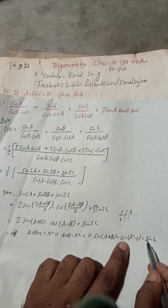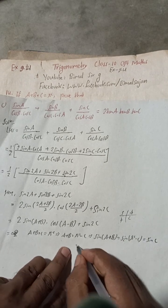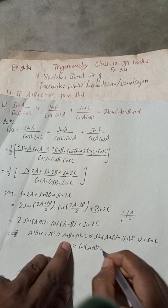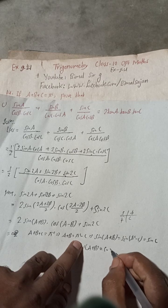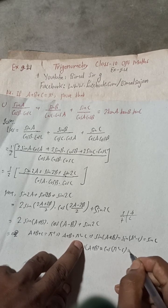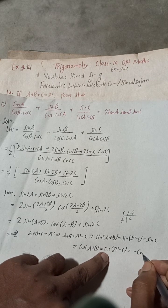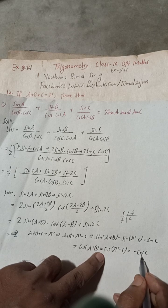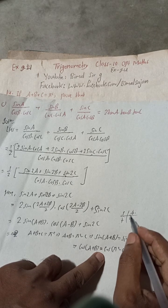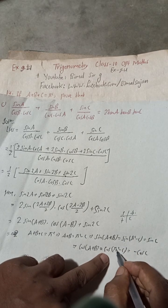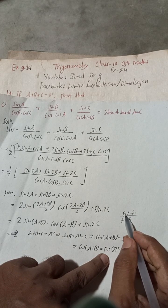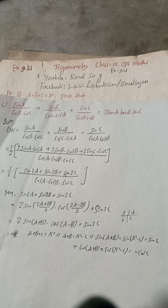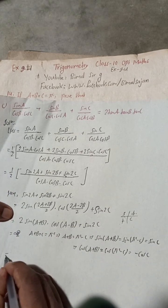In the same way, taking cosine of both sides: cos(A+B) equals cos(pi − C), which equals minus cos C — because for pi minus C, it falls in the second quadrant where cosine is negative. Now we will apply these results back to our expression.